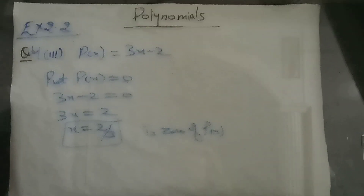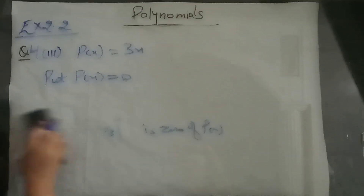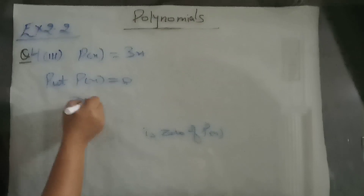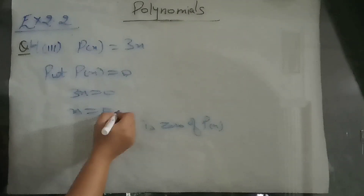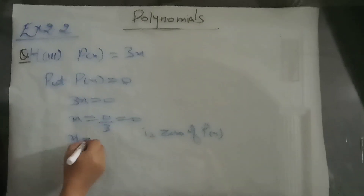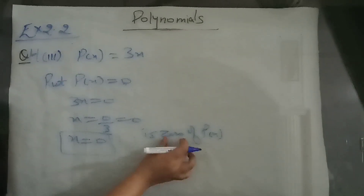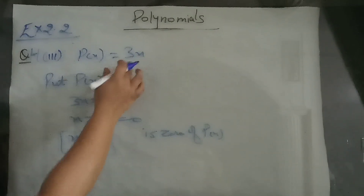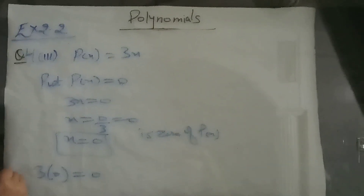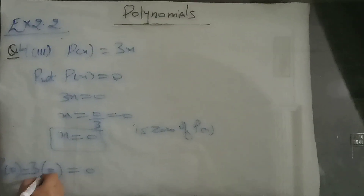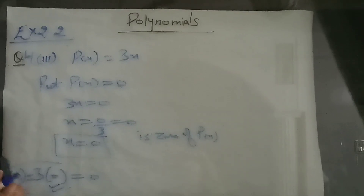Fifth part: p of x is 3x. Put 3x equal to 0, so x is 0 upon 3, which is 0. So 0 is the zero of the polynomial. When you put 3 into 0 in the polynomial, your answer becomes 0, confirming it is the zero.